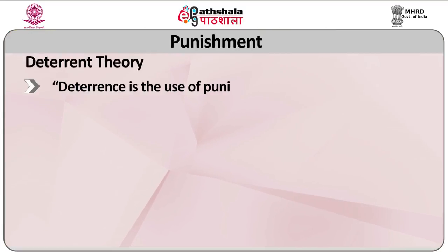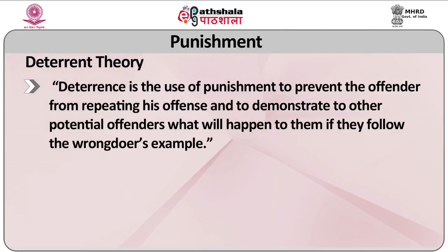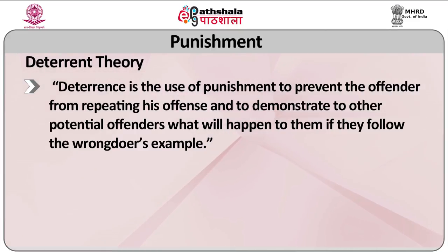We will now go into detail of deterrent theory. According to this theory, the purpose behind punishment should be to deter prospective criminals. An offender is punished to be set as an example so that prospective offenders may see the consequences that they may have to face. In other words, deterrence is the use of punishment to prevent the offender from repeating his offense and to demonstrate to other potential offenders what will happen to them if they follow the wrongdoer's example.